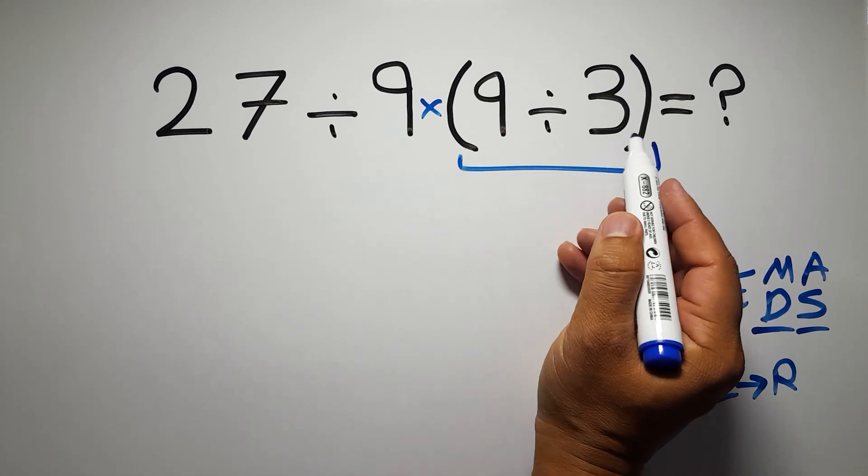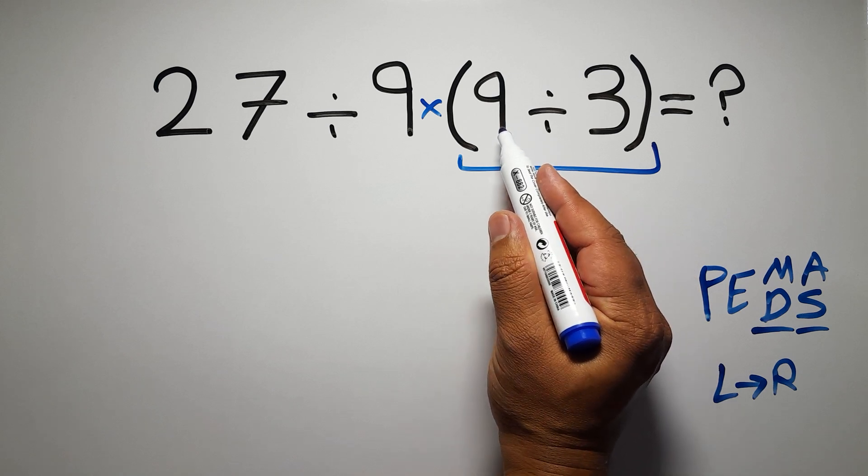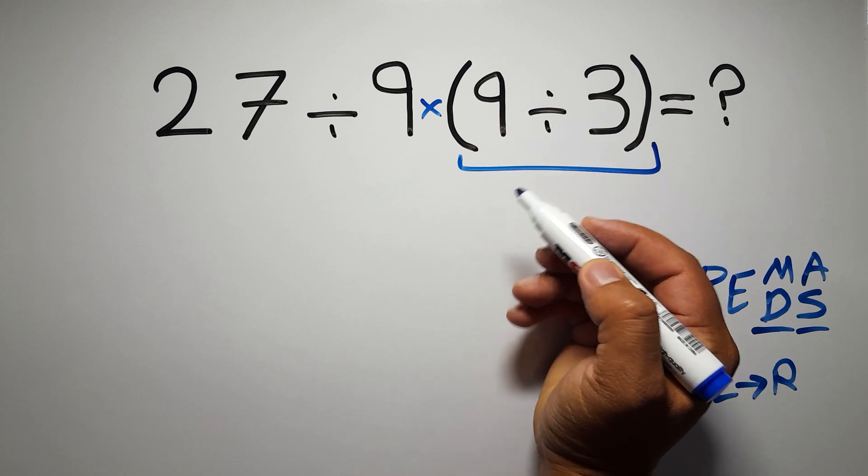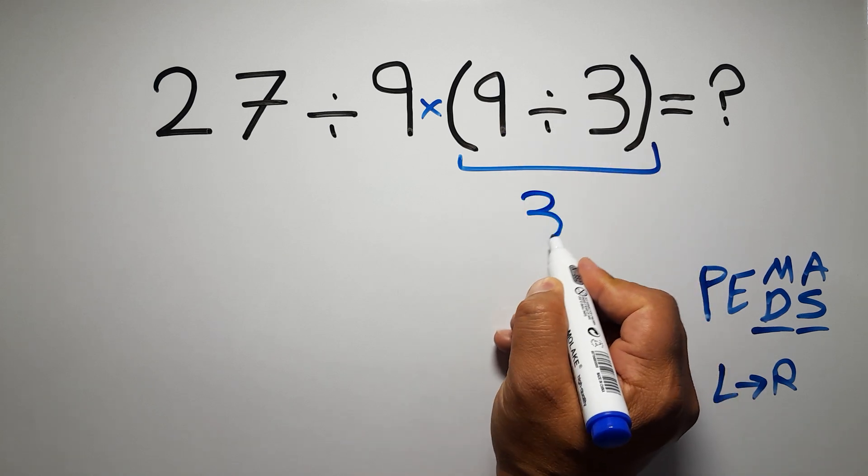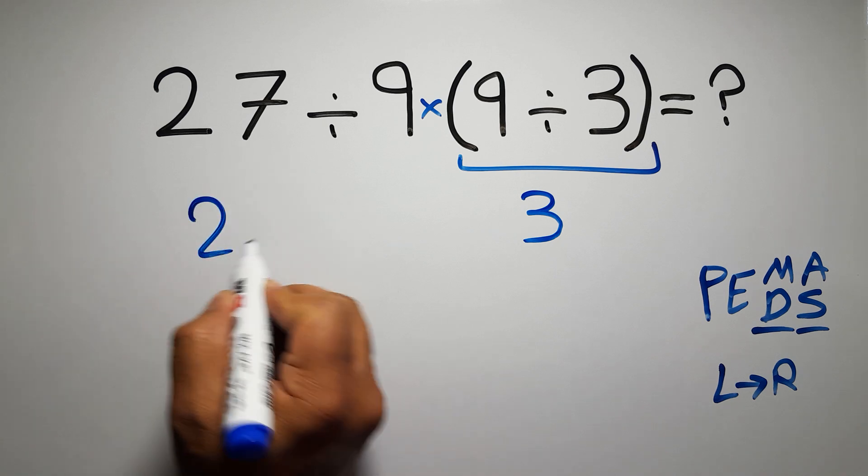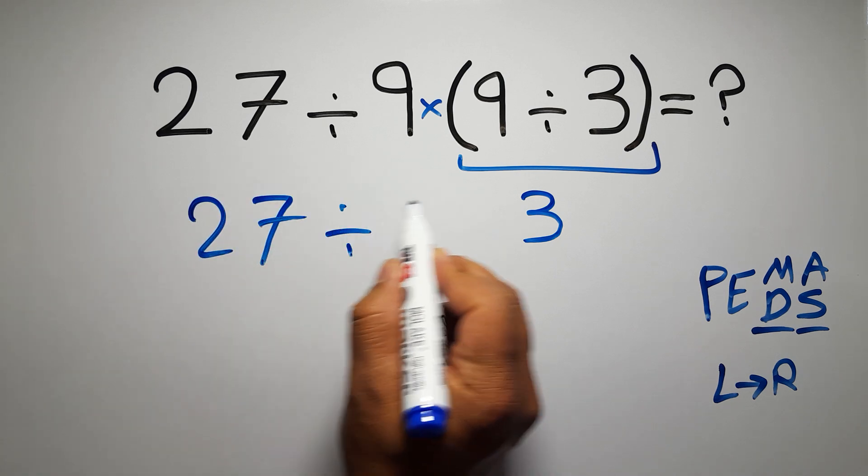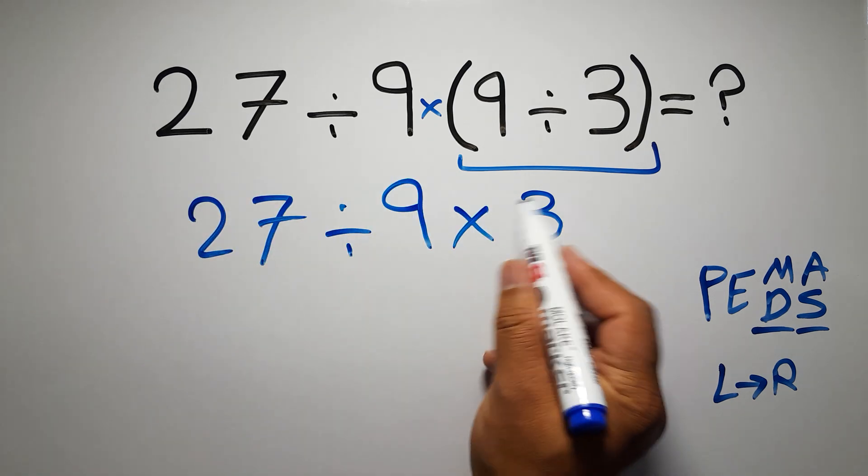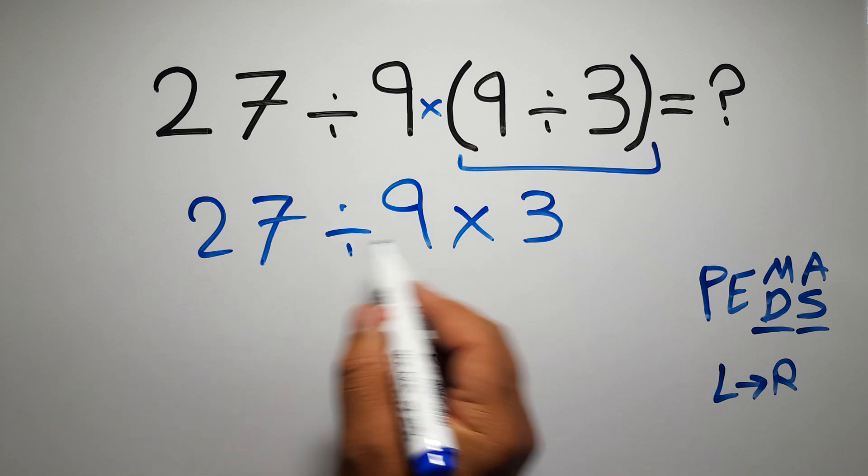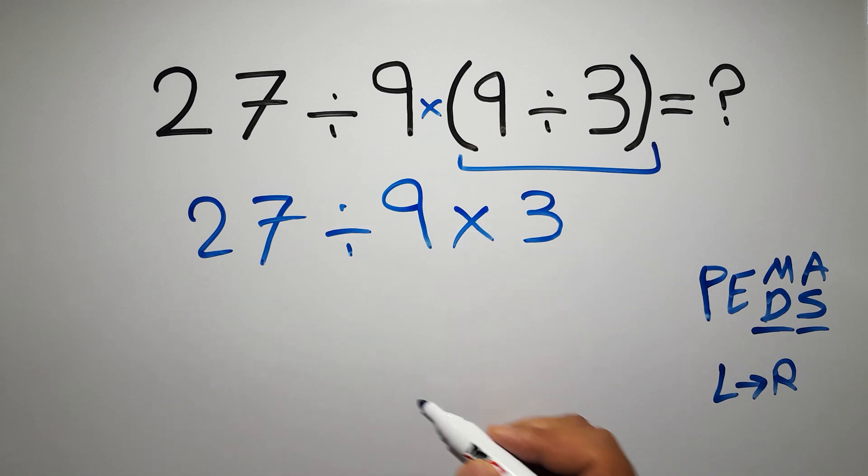So first these parentheses. Inside these parentheses, we have 9 divided by 3, which equals 3. So we have 27 divided by 9 times 3. Now we have one division and one multiplication. As I said, multiplication and division have equal priority, and we have to work from left to right.